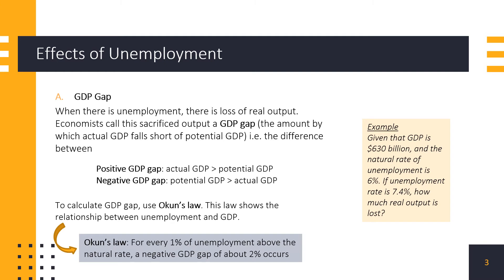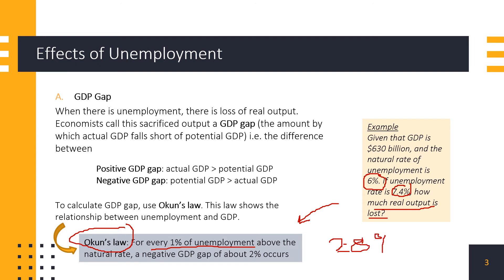Why don't you try this example? Given that GDP is $630 billion and the natural rate of unemployment is 6%, if the unemployment rate is 7.4%, how much real output is lost? We can use Okun's Law to solve this. The NRU is 6% and the unemployment rate is 7.4%, so the difference between these two is 1.4%. Okun's Law says that for every 1% of unemployment above the NRU, a negative GDP gap of 2% occurs. So we multiply 1.4% by 2, giving us a negative GDP gap of 2.8%.